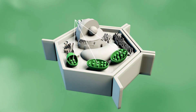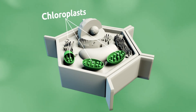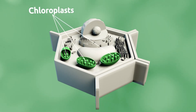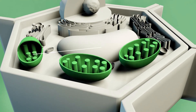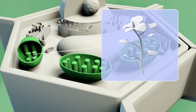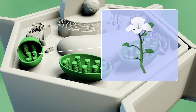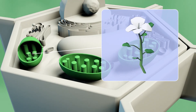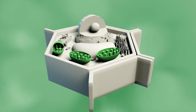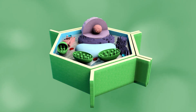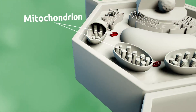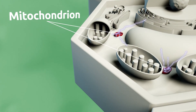Chloroplasts are the organelles which produce and store chemical components essential to the cell. For example, chlorophyll, which gives plants their green color, is stored in the chloroplasts. Chlorophyll also plays an important role in photosynthesis. The mitochondrion is the organelle in charge of producing energy in the cell.